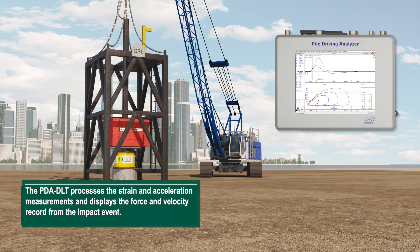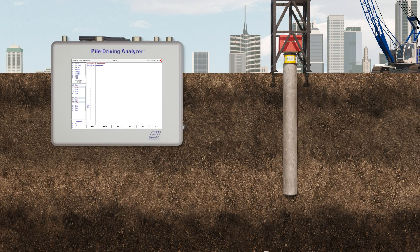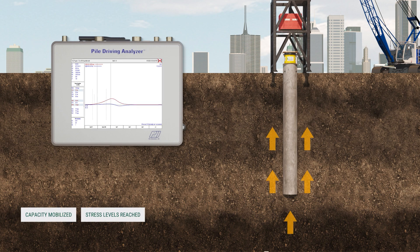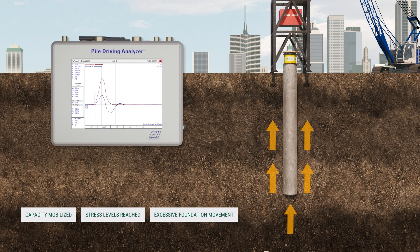The PDA DLT processes the strain and acceleration measurements and displays the force and velocity record from the impact event. Based on the movement and recorded stress levels and mobilized capacity, the process is typically repeated at increasingly higher drop heights with the incremental and cumulative movement recorded after each blow.